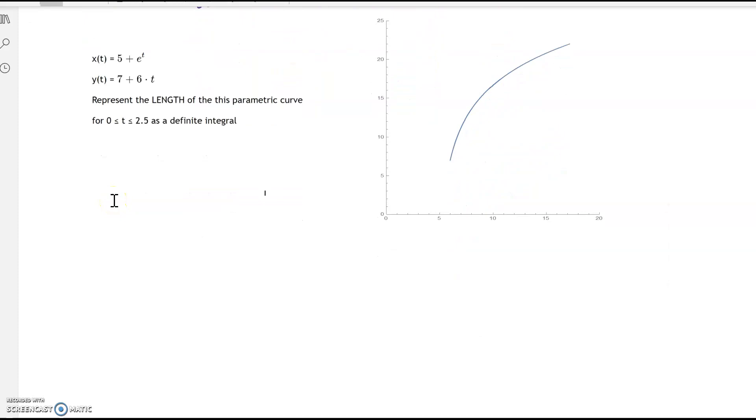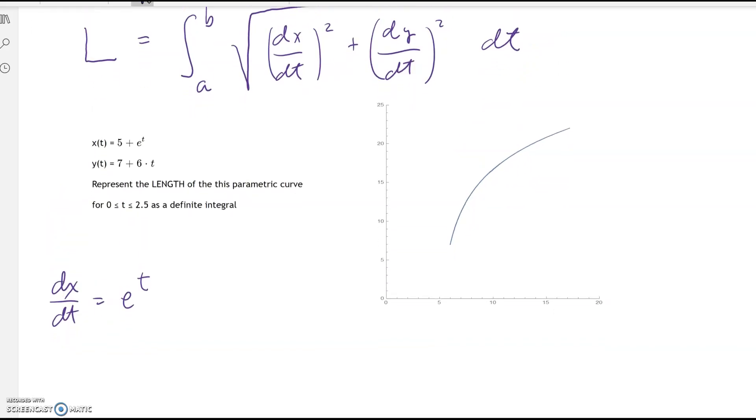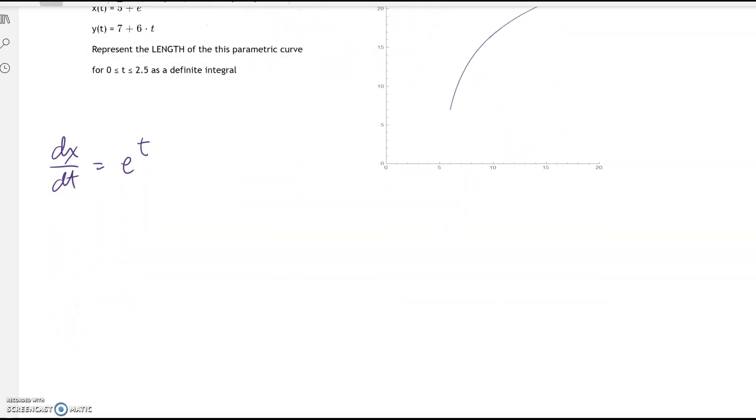The first thing you have to do is get the derivatives of x and y. So dx/dt, well the 5 drops out, the derivative of e^t is e^t. Now in the formula you have to square those derivatives, so let's do that right now. dx/dt squared is e to the t power squared, which is e to the 2t power.